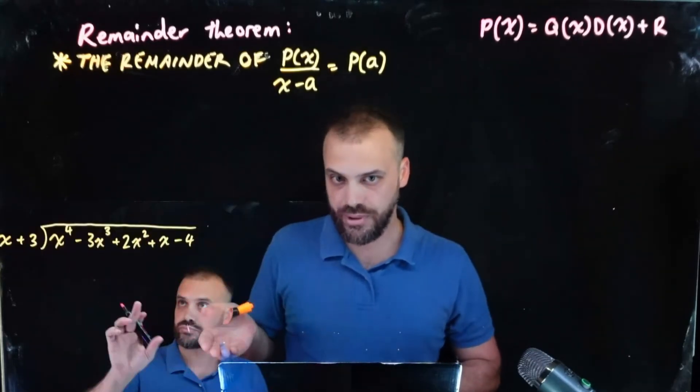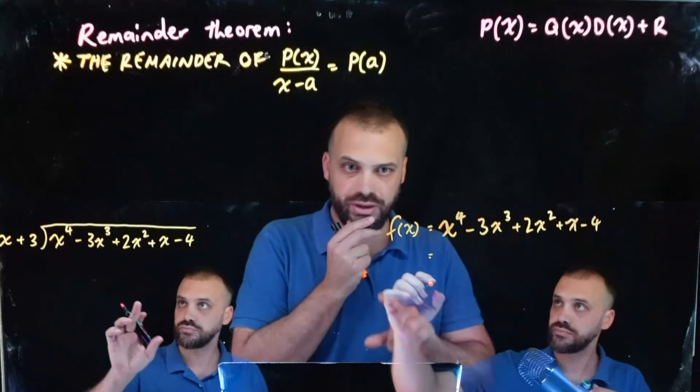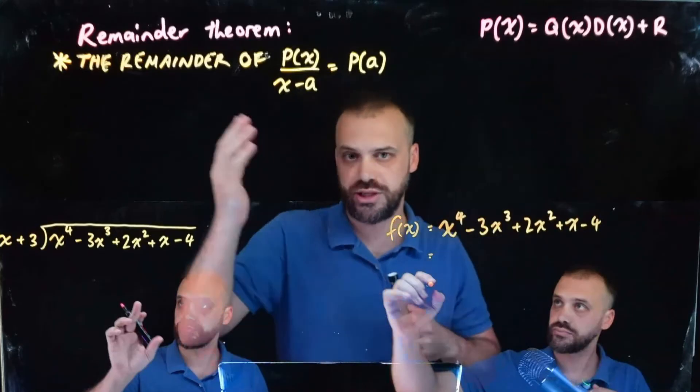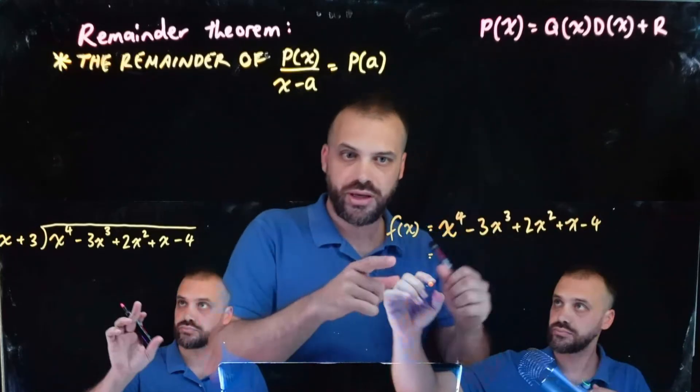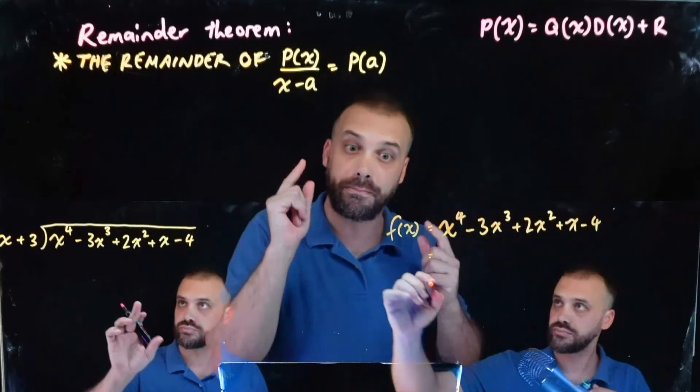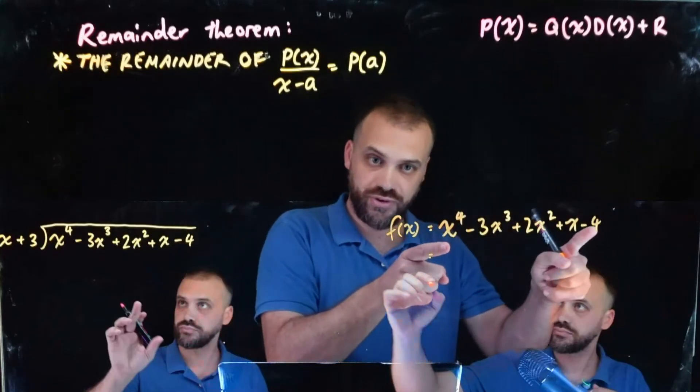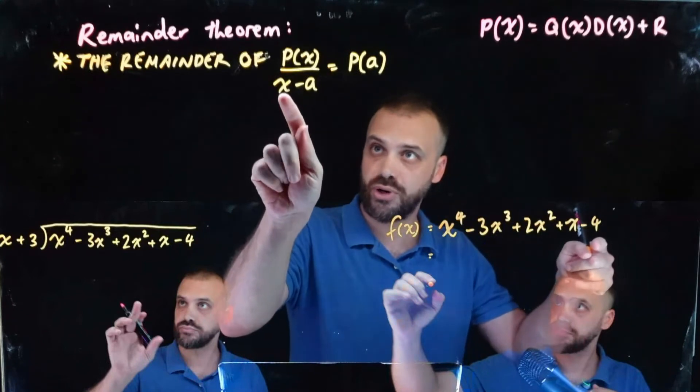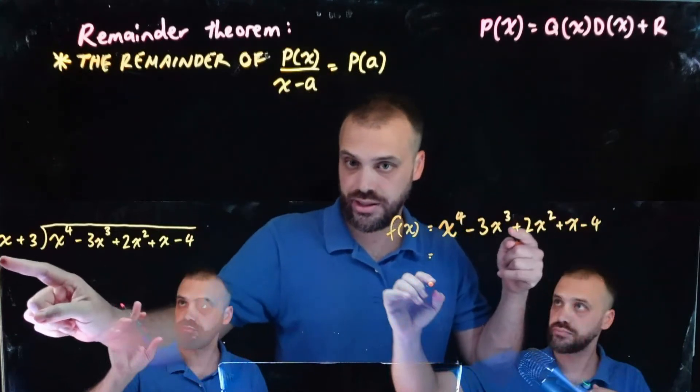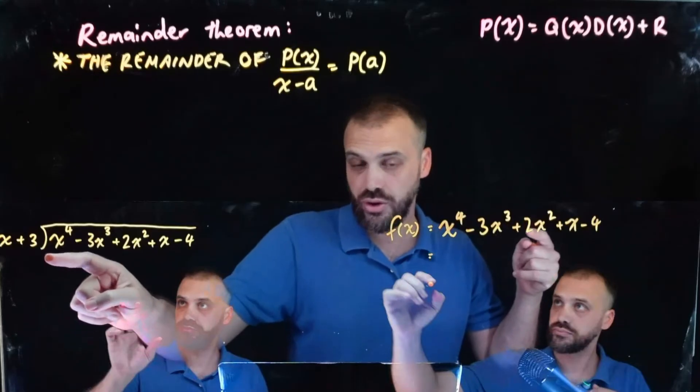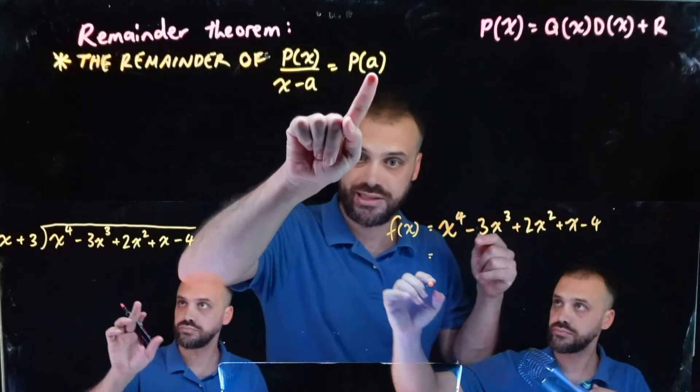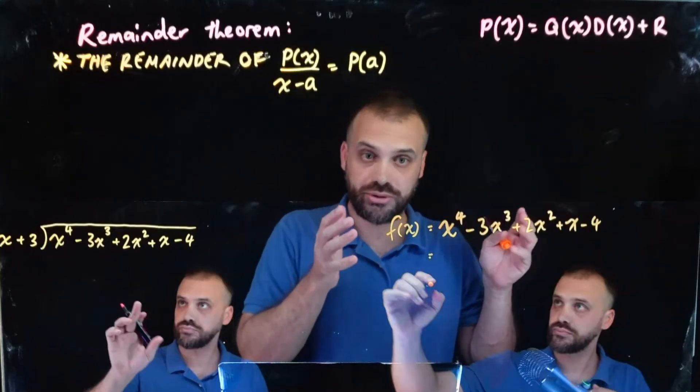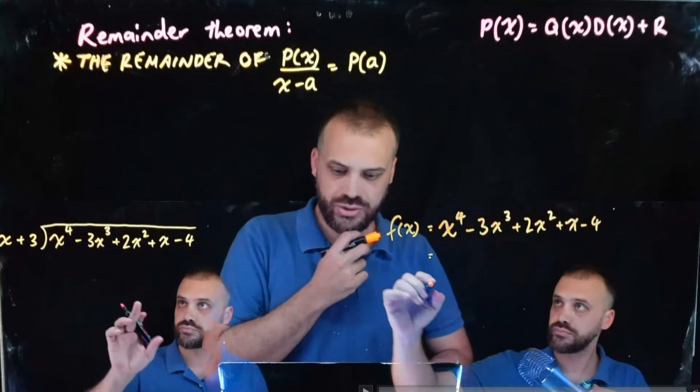Now this one here, this is what we're talking about. This is the super powerful idea that's called the remainder theorem. If we want to know what the remainder will be when we take this function, x to the 4 minus 3x to the 4, and divide it by x minus a, in this case it was x plus 3, all we need to do is sub in negative 3 into our polynomial and we'll have an answer. Let's watch him in action.